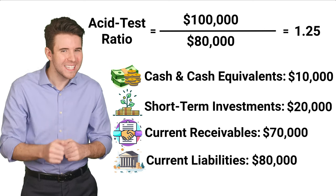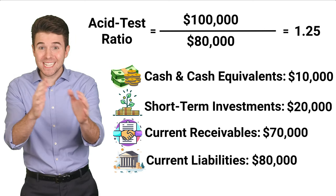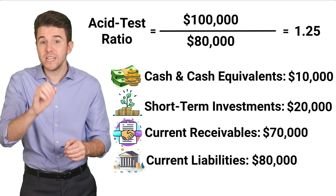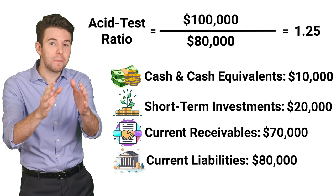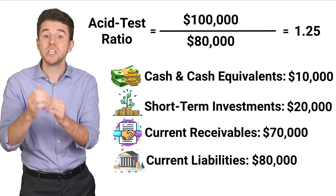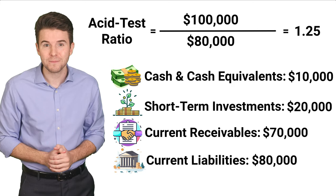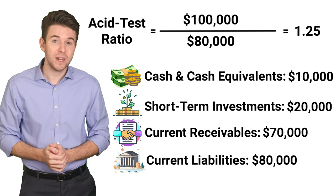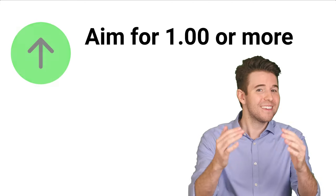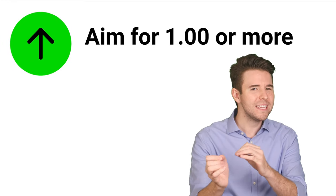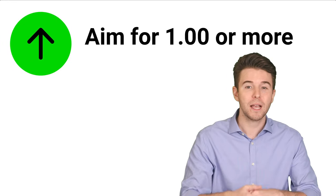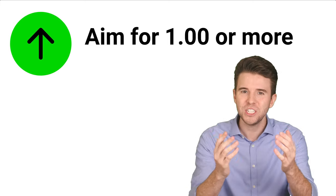Now, what does this number tell us? An acid test ratio of 1.25 means that the company has enough quick assets to cover its current liabilities, and that it's in a fairly good liquidity position. Anything less than 1.0 raises some concerns, unless the company has some other way to quickly generate cash.